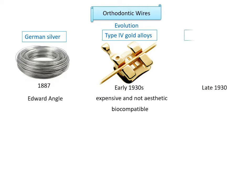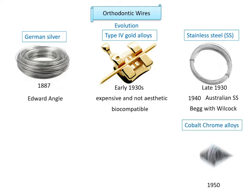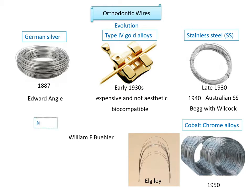In the late 1930s, stainless steel was introduced for appliance fabrication. By the 1950s, stainless steel alloy was used by most orthodontists. In the 1940s, Begg and Wilcock introduced Australian stainless steel. By the 1960s, gold was universally abandoned in favor of stainless steel. In the 1950s, cobalt-chrome alloys drawn into wires became available for use in orthodontic appliances, marketed as Elgiloy. They were softer and more formable. In 1962, William Buehler invented Nitinol at the Naval Ordnance Laboratory, Maryland.